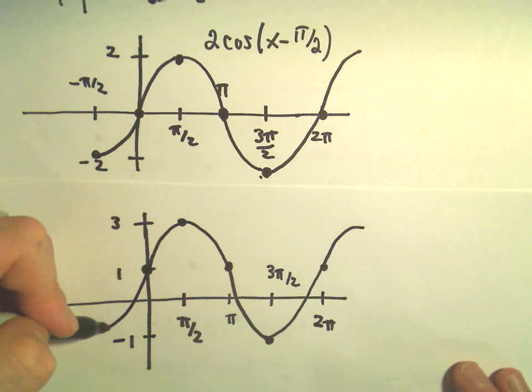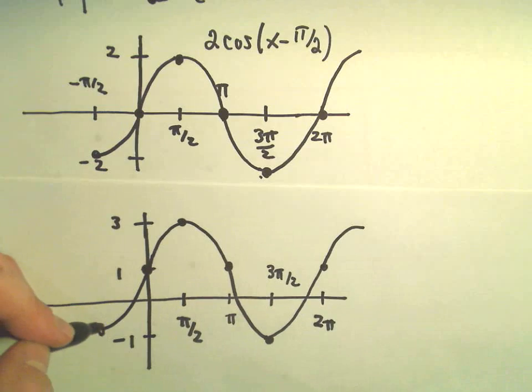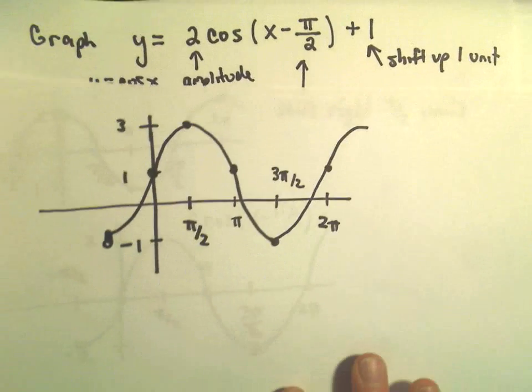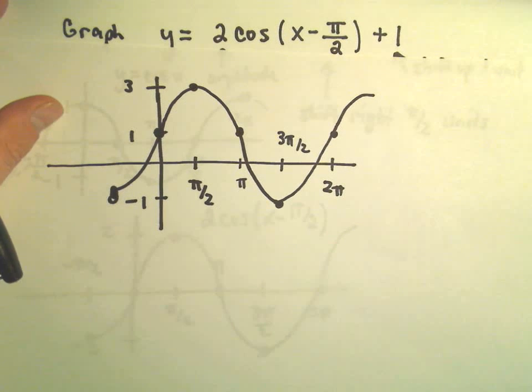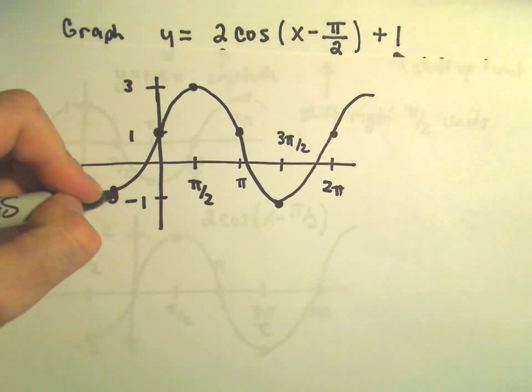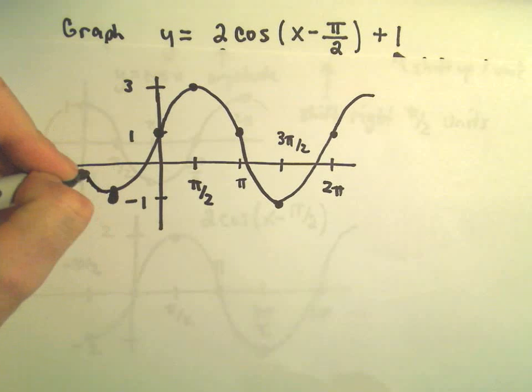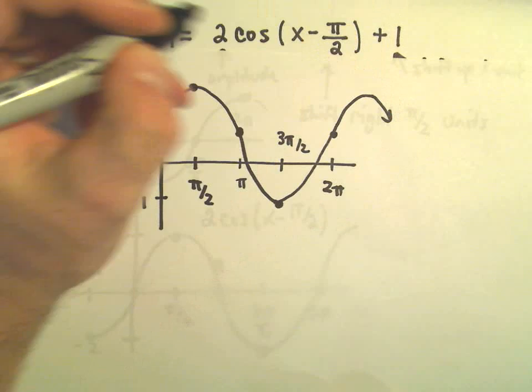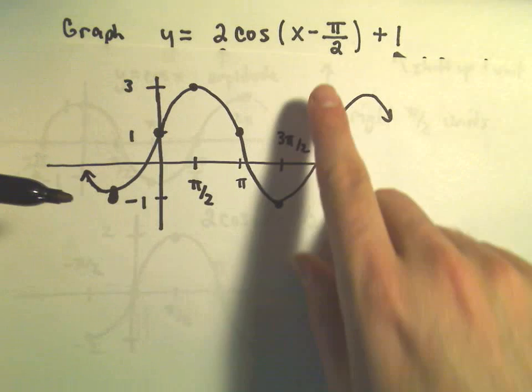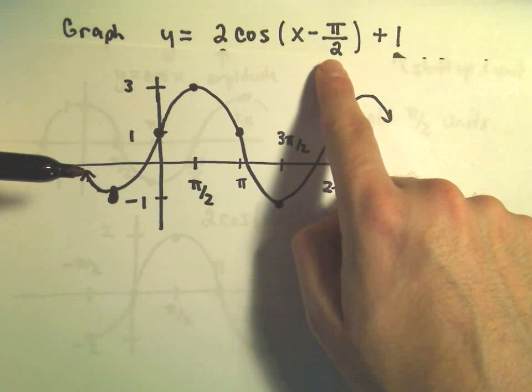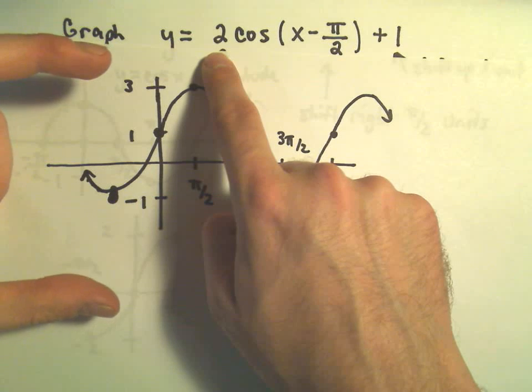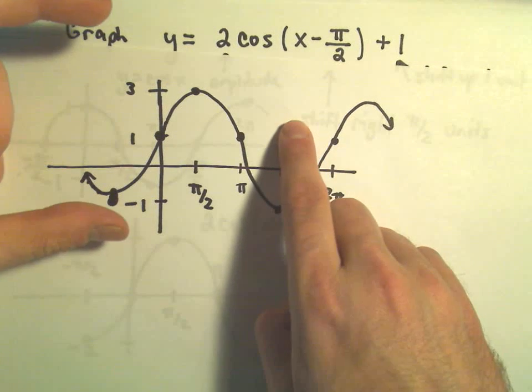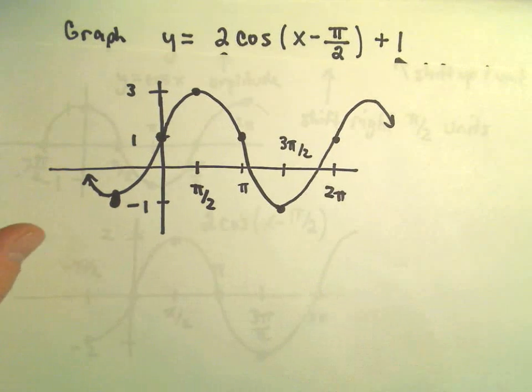So that's pretty much all there is to it. This is how if somebody told me to graph this original thing, this is exactly my thought process. I kind of do it just a little step at a time. They definitely keep going, but this is how I do it. I kind of shift it to the right pi over 2 units, I think about this amplitude and how it's stretching the graph out, and then I just take that whole thing and move it up one unit because of the plus 1.